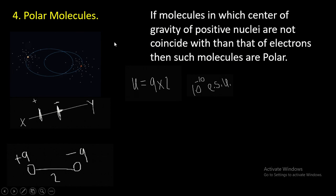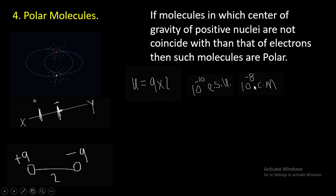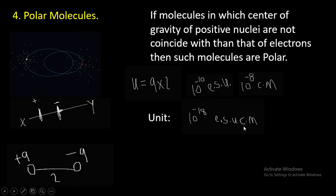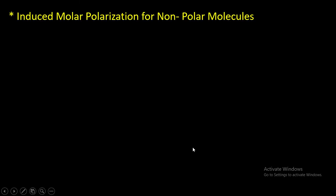The product of charge and length is called the dipole moment, denoted by μ (mu). Polar molecules have a dipole moment, but for non-polar molecules the dipole moment equals zero. The order of charge is 10⁻¹⁰ electrostatic units, and the order of the length between the two charges is 10⁻⁸ cm. Therefore the order of the dipole moment is 10⁻¹⁸ esu·cm, which is defined as 1 Debye (D). The unit of dipole moment is either esu·cm or Debye, and 1 D = 10⁻¹⁸ esu·cm.